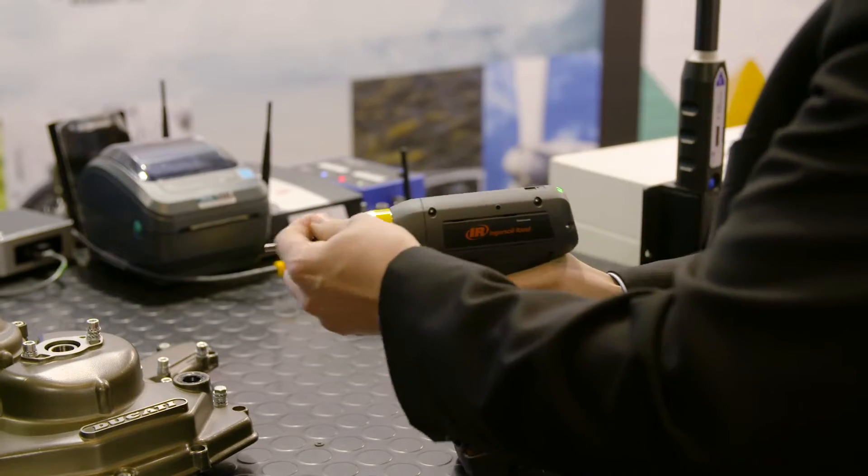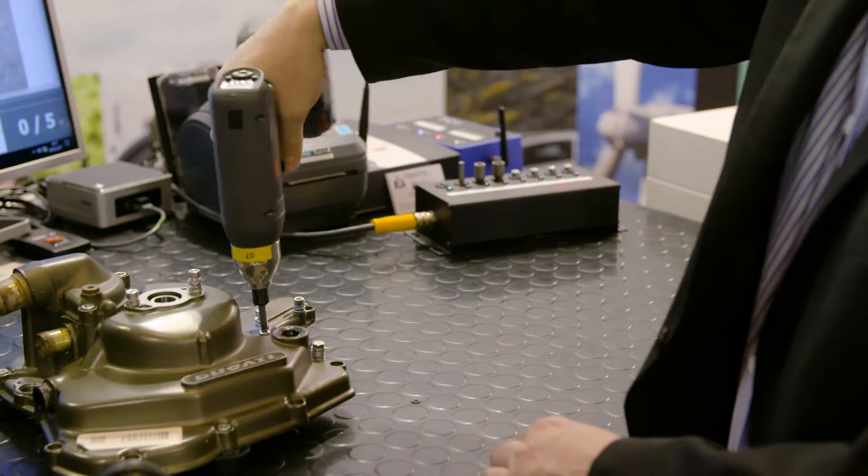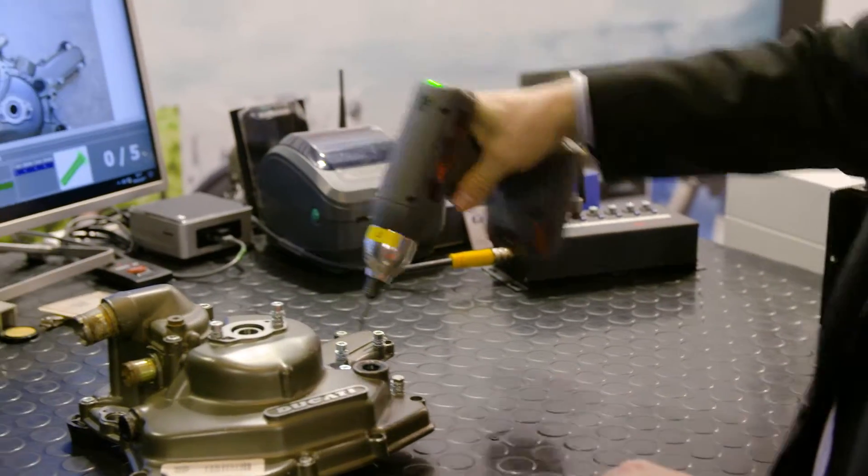ProSuite is a MES system for the assembly industry that makes it possible to instruct the operators on the production line to execute the assembly correctly to the specifications of the customer.